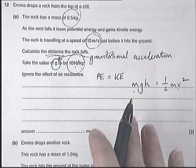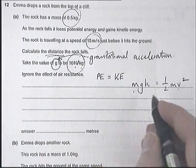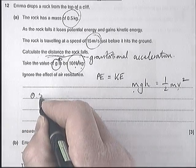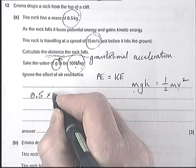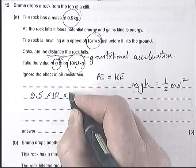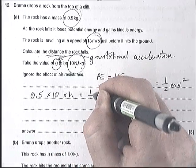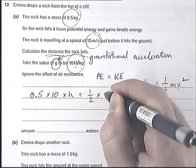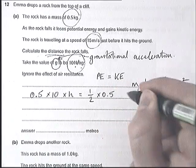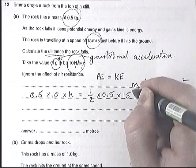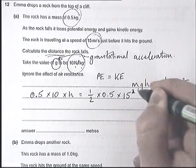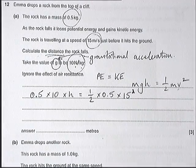All you really had to do from here was just input the numbers. 0.5 is the mass times 10 times h - that's what we want to work out - equals a half times 0.5 times 15 squared. Now it looks a little bit daunting even to have it like that.